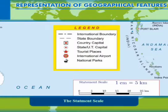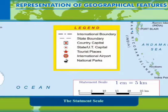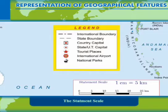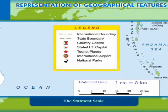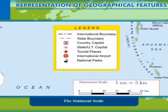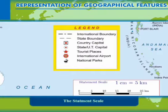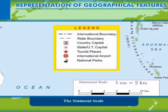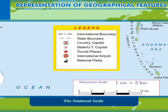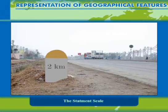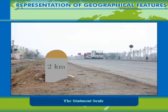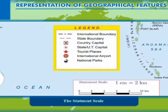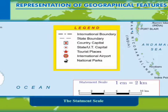The statement scale is the easiest to read. It needs no calculation to read and understand what it indicates. It uses simple words to represent the ratio of the distance on the map to that of the corresponding distance on the ground. For example, the statement scale is written as 1 cm is equal to 2 km, meaning 1 cm on the map is equal to 2 km on the ground.